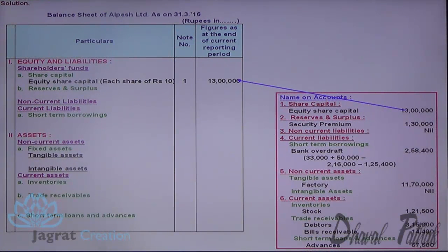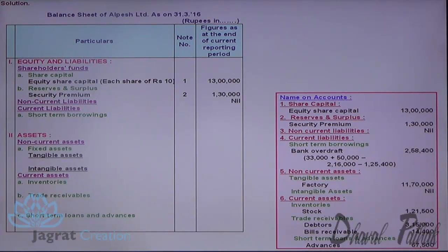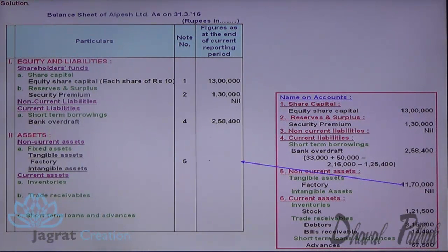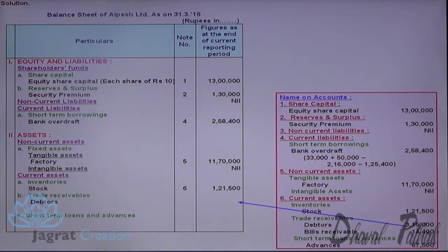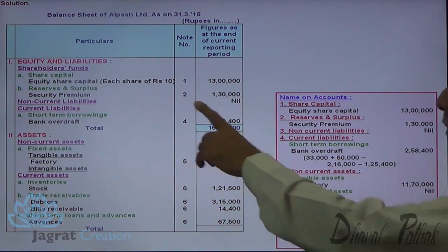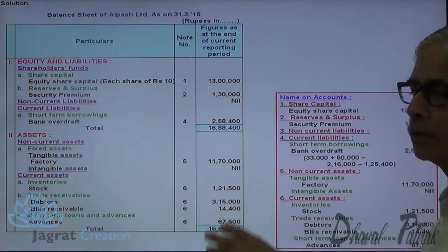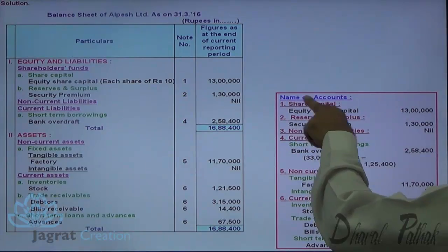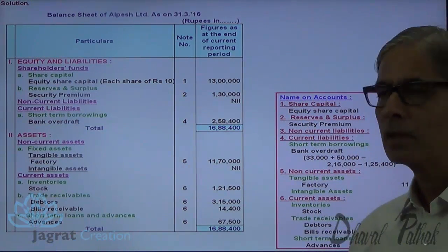Equity share capital and security premium are covered in notes on accounts. Now I want to prepare a balance sheet as per Schedule 3. These are the titles under which the information is to be recorded as per Schedule 3: equity share capital shares of rupees 10 each, security premium, non-current liabilities — nil, current liabilities — bank overdraft, then tangible assets, then inventories, stock, debtors and bills receivable, advances. The total of equity and liabilities equals assets. This is how the balance sheet is prepared.